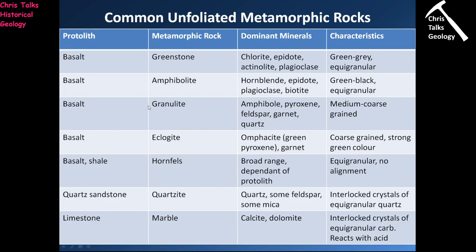Eclogites are produced when a basalt enters the mantle - very high pressure, very high temperature. Because pressure is equal in all directions, there's no one orientation through which the minerals are being compressed, so the minerals don't align.